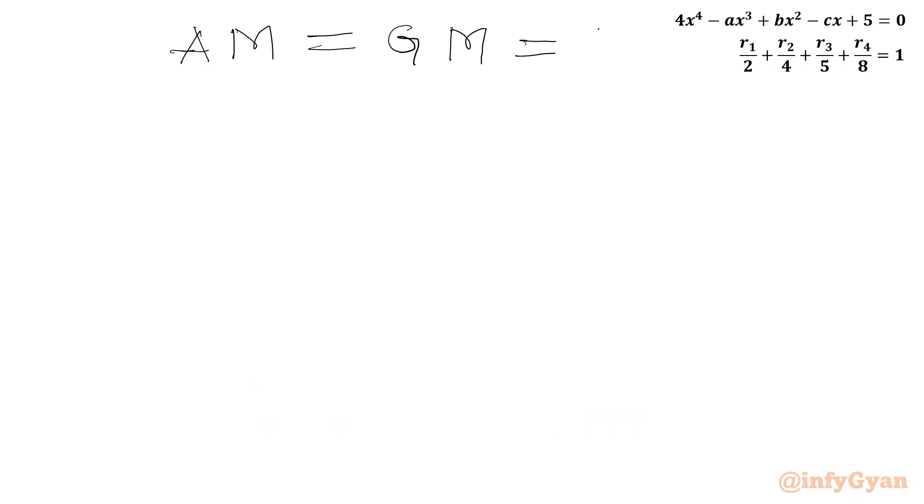Value is 1 over 4. So this will be possible if R1 over 2 equal to R2 over 4 equal to R3 over 5 equal to R4 over 8. Let us say this equality equal to k.